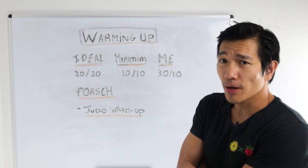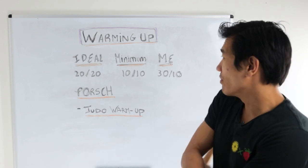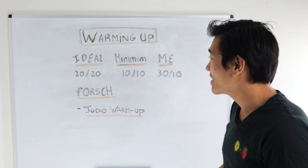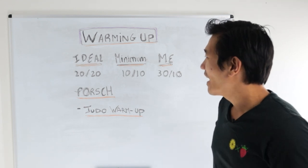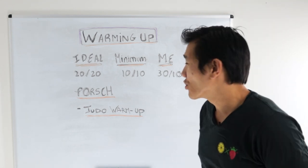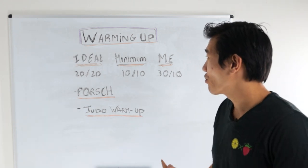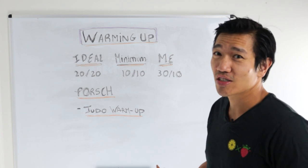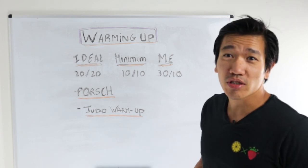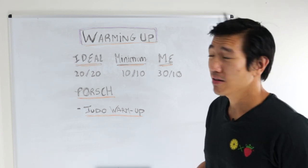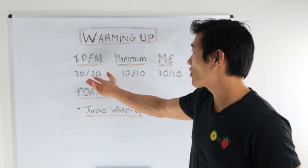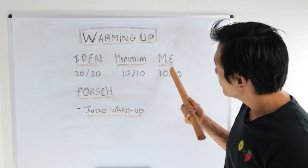So ideally 20-20, at least 20 minutes of warm-up. The minimum, like the minimum you should do, is 10 minutes. But really I feel as though 10 minutes if you're doing something like lifting weights you can get away with it, but if you're going to do something where there's a lot of contact and physical effort and there's higher risk of injury because it's dynamic, then you should definitely go for at least 20.